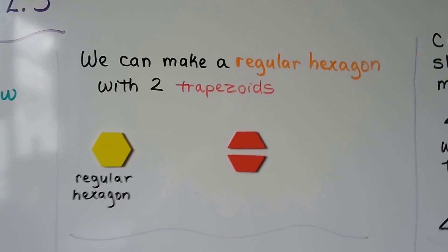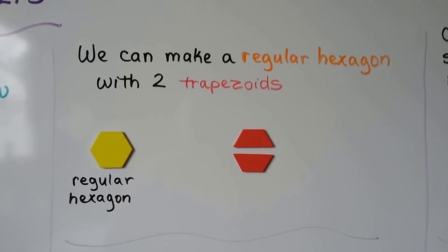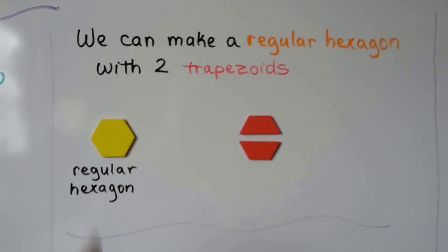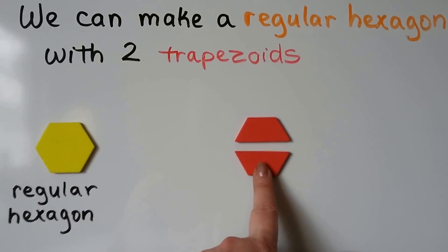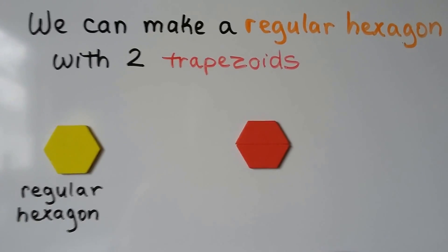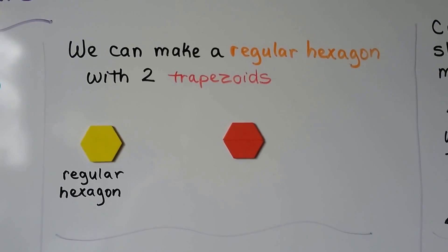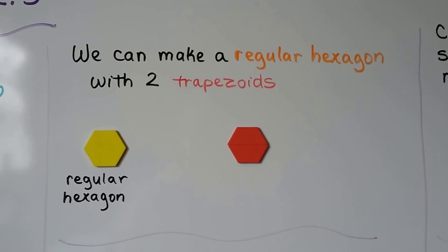We can make a regular hexagon with two trapezoids. Here we have a regular hexagon, and if I slide these two trapezoids real close together, look, I made a regular hexagon with two trapezoids.